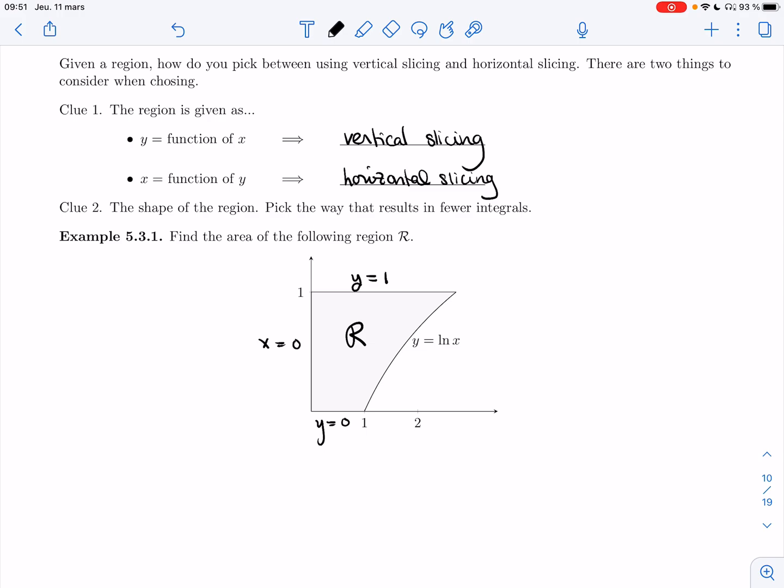Let me label all the points. This is 1, 0. This has y value 1, and so ln of x is 1. The x value would be e.